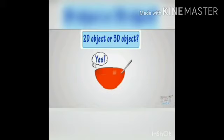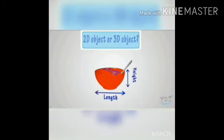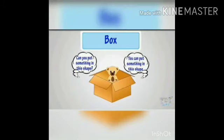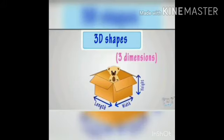Look at this picture — length, height, width. 3D shapes have length, height, and width. Look at this box — you can put something into the box. Yes, we can put something into it because it is a three-dimensional shape. It has length, width, and height. So, in a 3D shape we can put something into it.